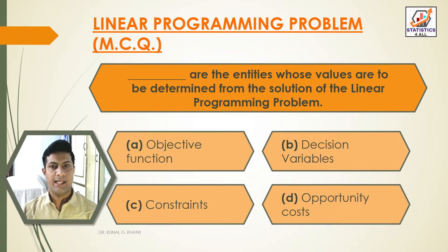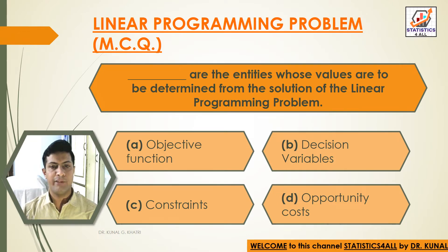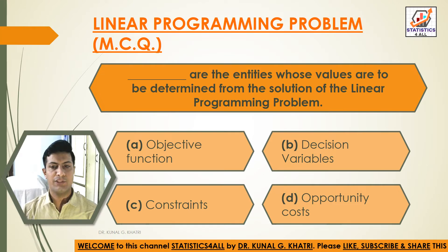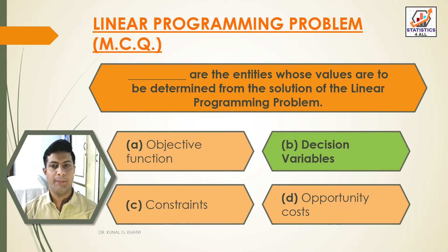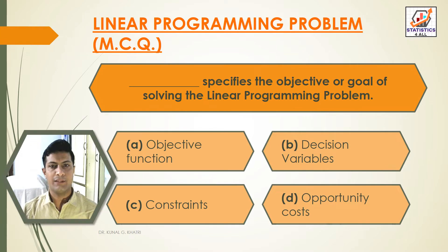Question 4: Dash are the entities whose values are to be determined from the solution of the linear programming problem. Option A: Objective function. Option B: Decision variables. Option C: Constraints. Option D: Opportunity cost. Answer: Option B — Decision variables are the entities whose values are to be determined from the solution of the linear programming problem.